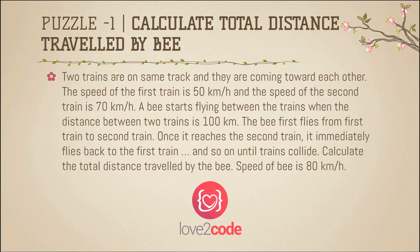Let's see the puzzle statement. Two trains are on the same track and they are coming towards each other. The speed of the first train is 50 km per hour and the speed of the second train is 70 km per hour. A bee starts flying between the trains when the distance between the two trains is 100 km. The bee first flies from the first train to the second train. Once it reaches the second train, it immediately flies back to the first train, and so on until the trains collide. Calculate the total distance traveled by the bee. The speed of the bee is 80 km per hour.